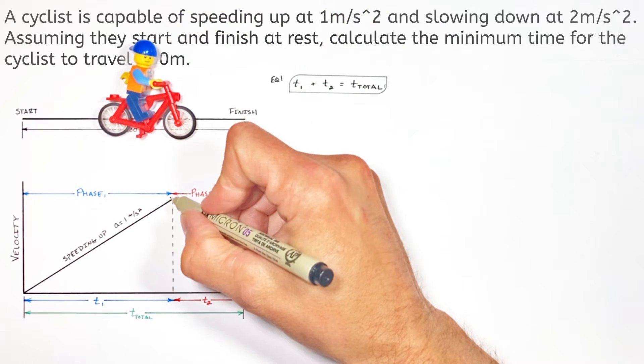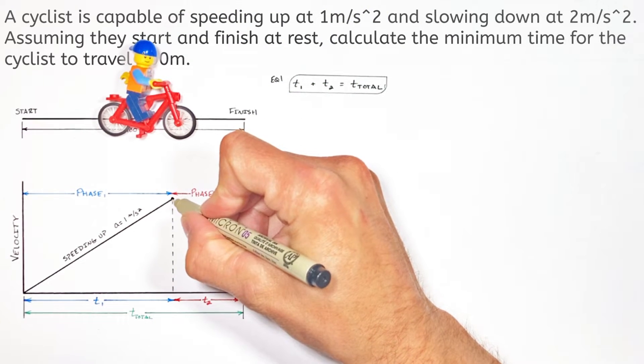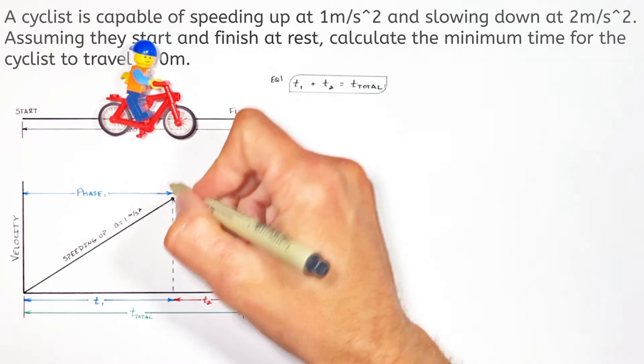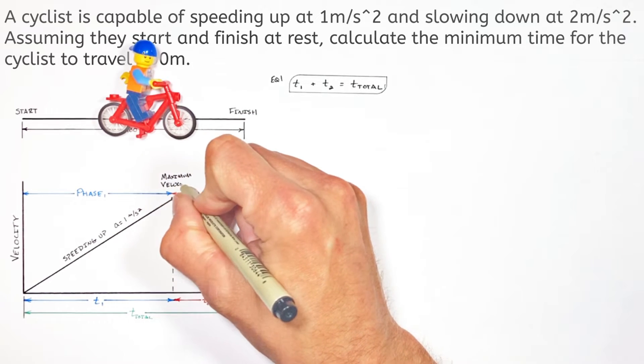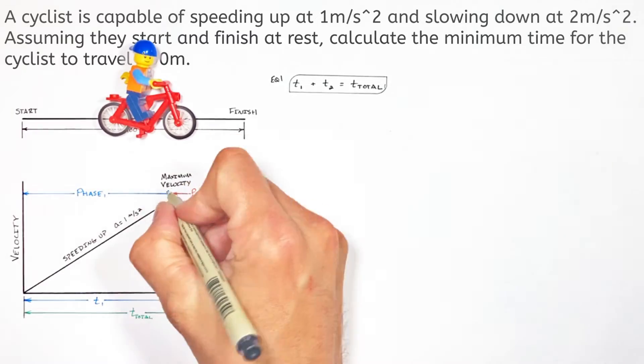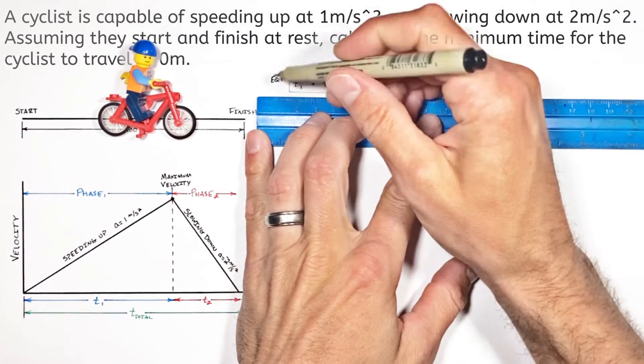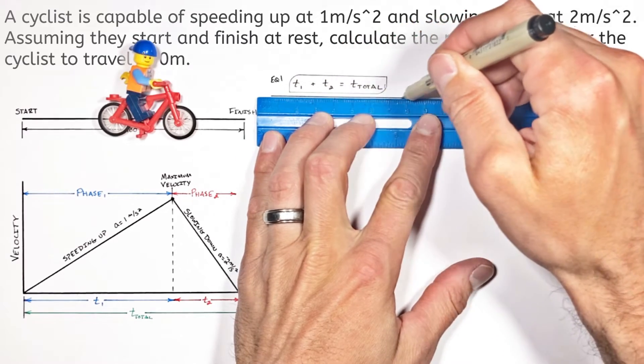Now going back to our graph, you'll notice this peak right here, which is the point where our little dude transitions from trying to speed up to hitting the brakes and slowing down. And that point is the maximum velocity at which the bicycle is ever going to travel. And we can use that maximum velocity to set up our next equation.